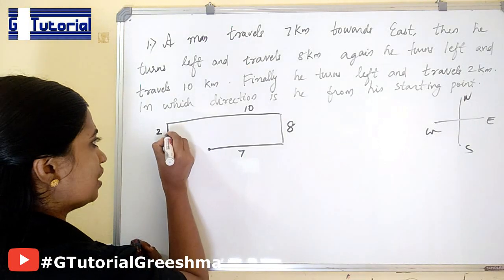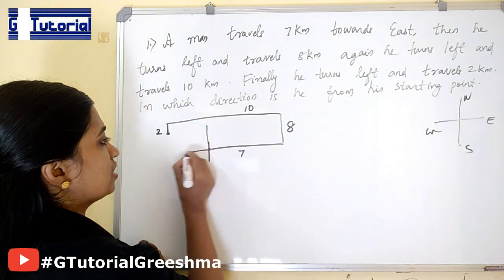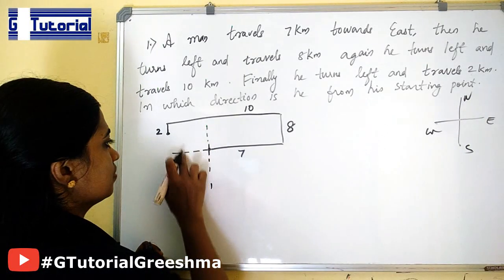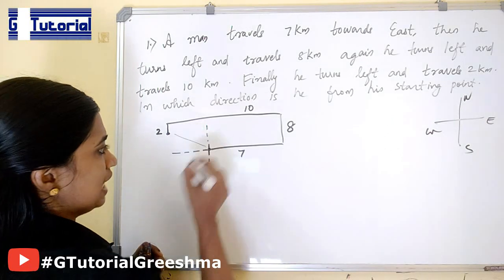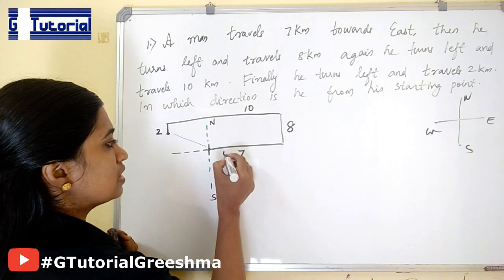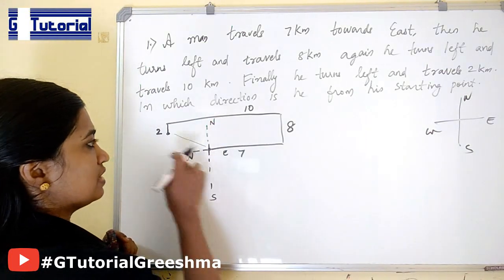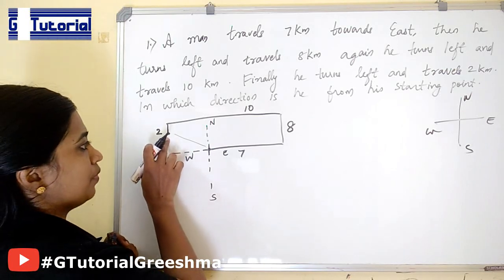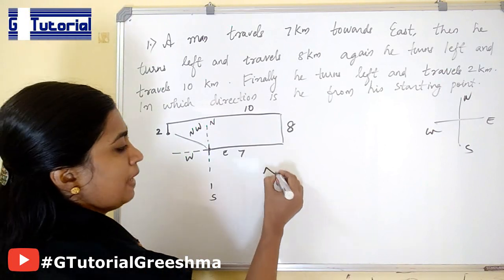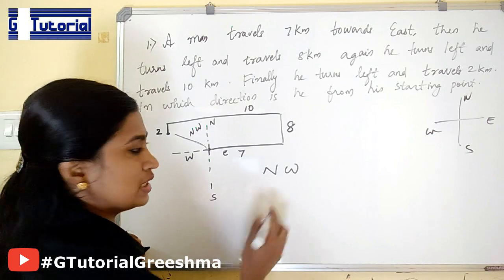From the starting point, he is in the direction between north and west — that is the north-west direction. So the man is in the north-west direction from his starting point. This is the answer. This is the first type of question.